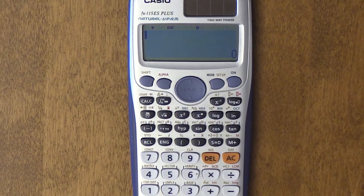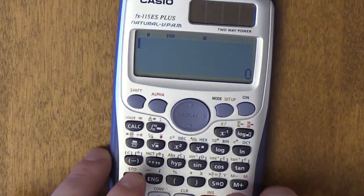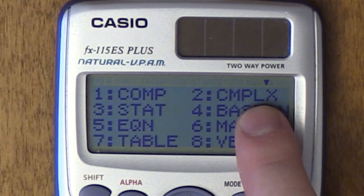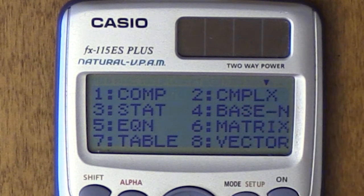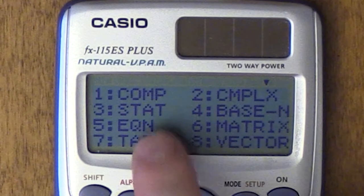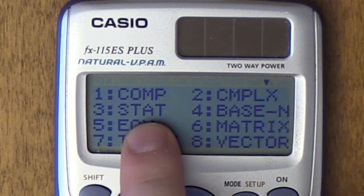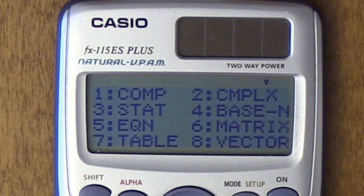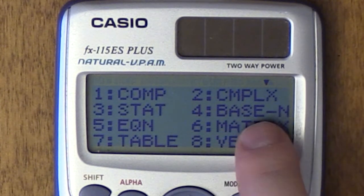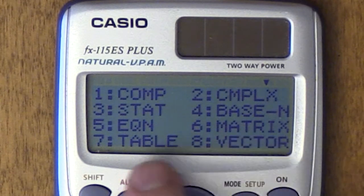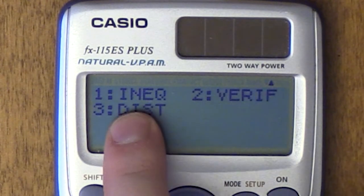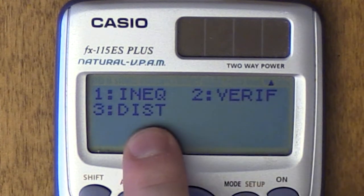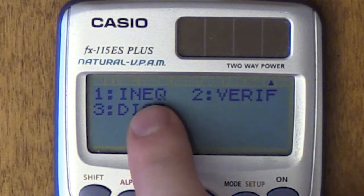I want to go over all the modes this calculator has, and what we covered and what we didn't. We did computation, complex. That just allows i as a complex number to be in your calculator and show up as a solution instead of error. I didn't do statistics. Explore that if you're interested. I didn't do base N because that's not something I really use. I always use base 10, but it's pretty self-explanatory. We did equations, matrices, tables, vectors, inequalities. We didn't do verification, and I'm going to explain right now, and distribution we did already.